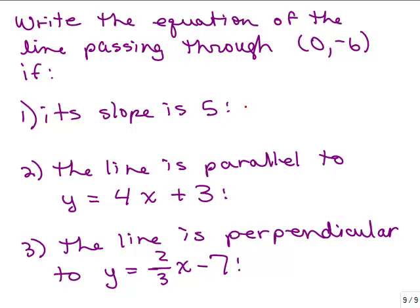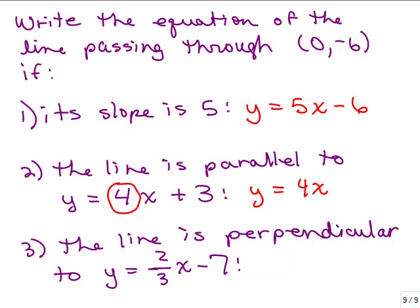The first one — slope is 5, easy: y equals 5x, and b is negative 6, so y equals 5x minus 6. Number 2, parallel to y equals 4x plus 3: it has the same slope, so 4x, and again minus 6, giving y equals 4x minus 6. For perpendicular to y equals 2 thirds x minus 7: that slope is 2 thirds, so the perpendicular slope is negative 3 halves, and also minus 6, giving y equals negative 3 halves x minus 6.